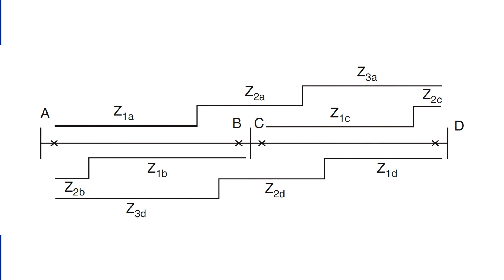Zone 1, or Z1A, is the first line of defense. Covering roughly 80% of section AB, Z1A is critical for quick action. Known as the high-speed zone, it operates without any intentional delays. When a fault occurs within this zone, the response is immediate, with no intentional delay.